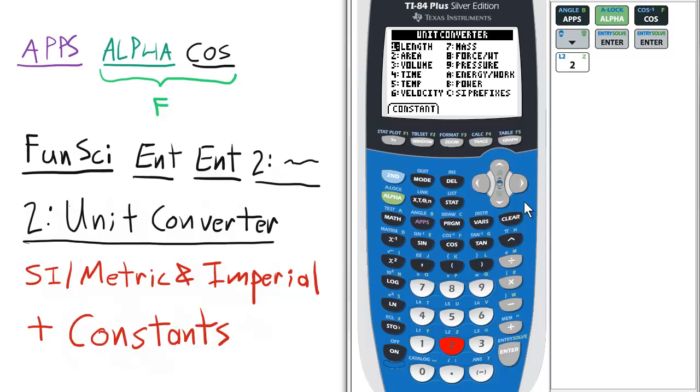Also, a boon to chemistry and physics folks, it has scientific constants such as Avogadro's number, Boltzmann's constant, Coulomb's constant, the molar gas constant, universal gravitational constant, subatomic particle masses, speed of light, etc.